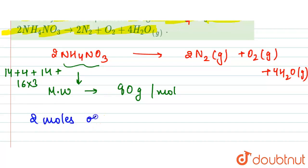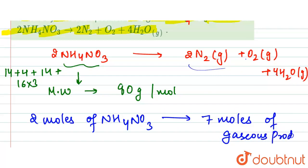So now what we can see is that 2 moles of NH4NO3 is giving us 7 moles of the gaseous product.